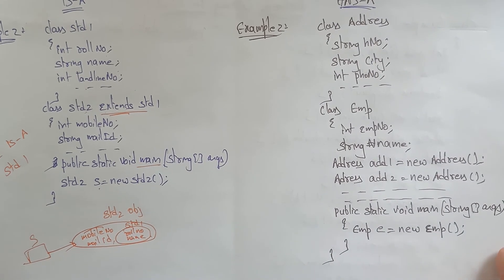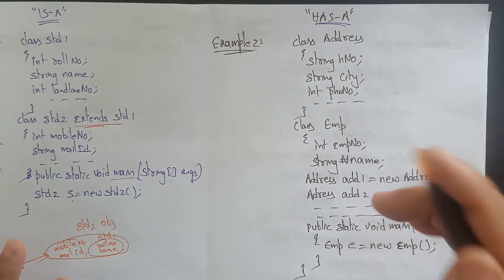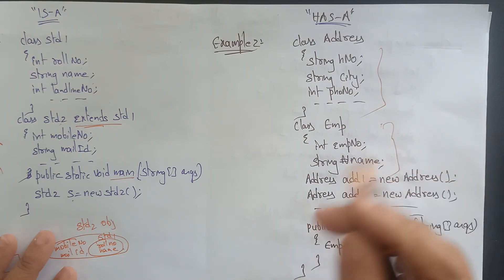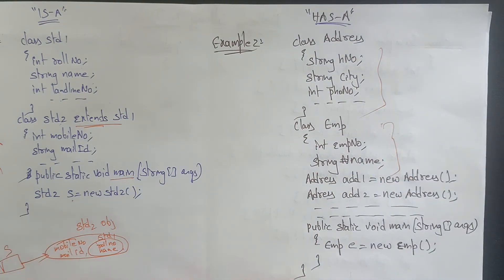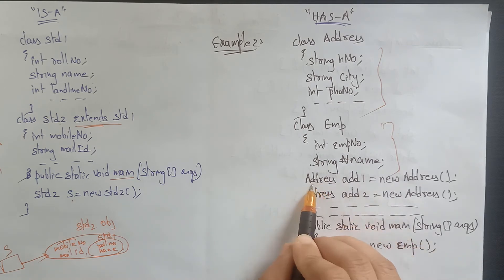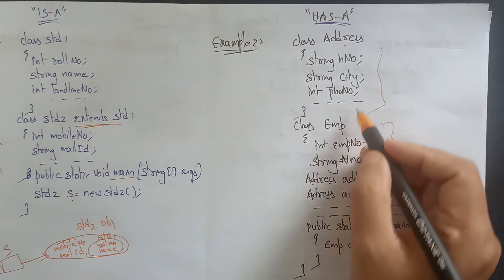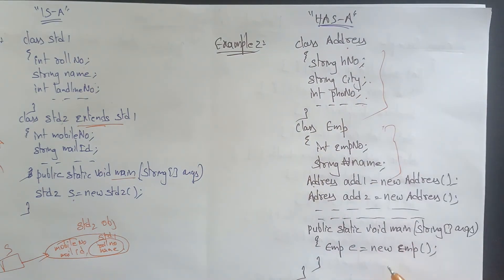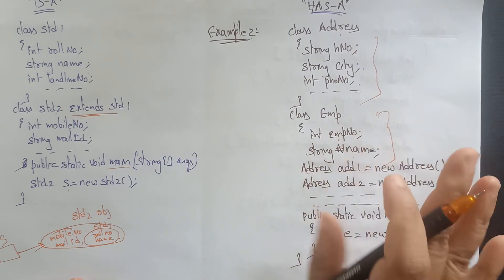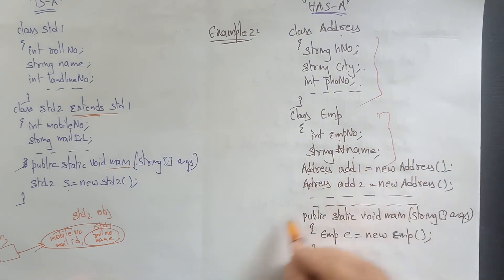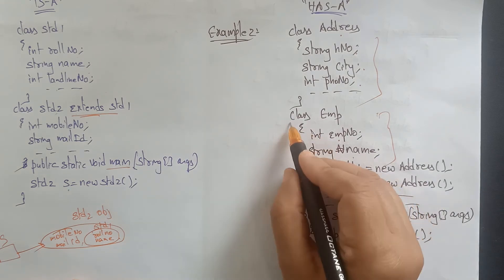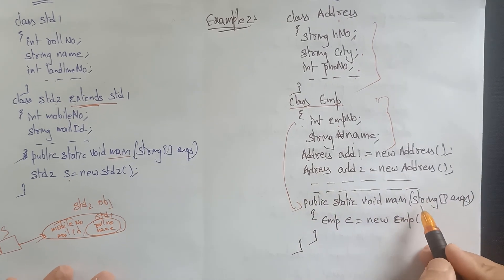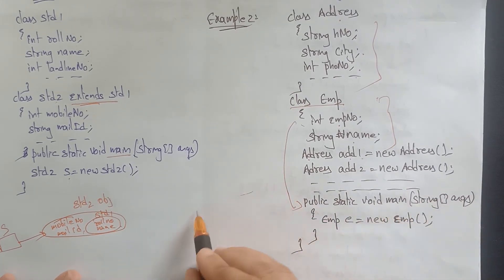Now for the 'has-a' example: class Address is one class and class Employee is another class. I'm creating an object of class Address inside class Employee, because an employee also has house number, city, and phone number. Employee also has an employee number and name. The Employee class is loaded and in the main function, an Employee object e is created.